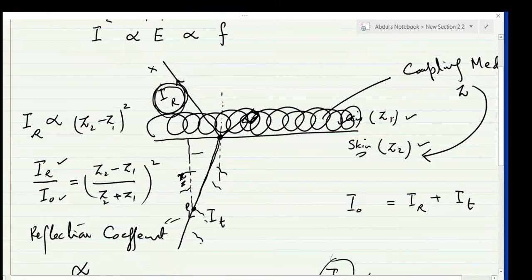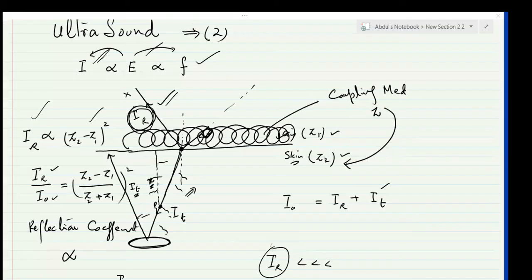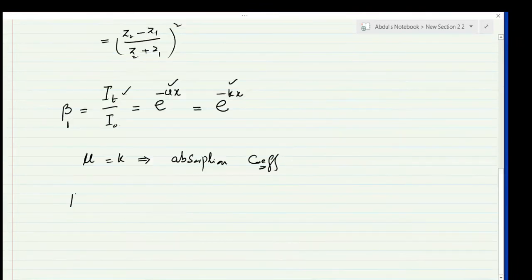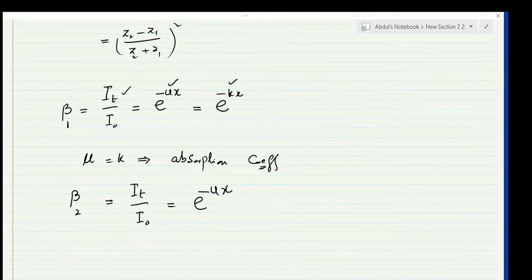The first loss of ultrasound is in the form of reflection and the second in the form of absorption. After the ultrasound reflects from an internal organ such as a kidney, during upward transmission it is also absorbed by the surrounding tissue. The downward transmission absorption coefficient is β1, and the upward transmission absorption coefficient is β2, both expressed as e^(−μx).